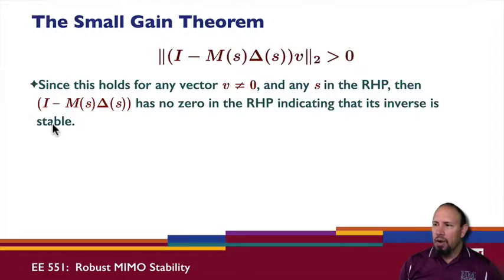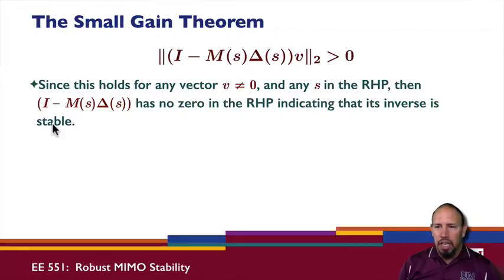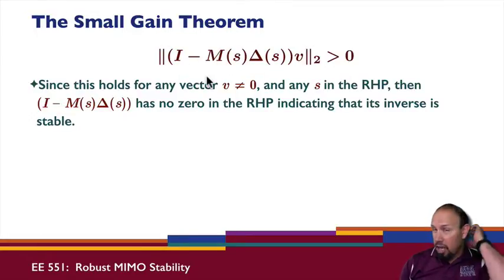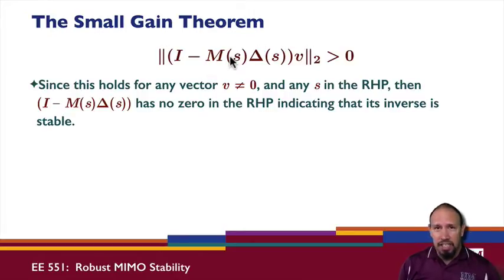Next, we look at recasting problems into the standard form. We've seen different forms — for example, additive uncertainty and multiplicative uncertainty — so how do we put those into the standard form? The theorem involves M, not P₀ or W, so the question is: how do P₀ and W correspond to M in this theorem? That's the next part.